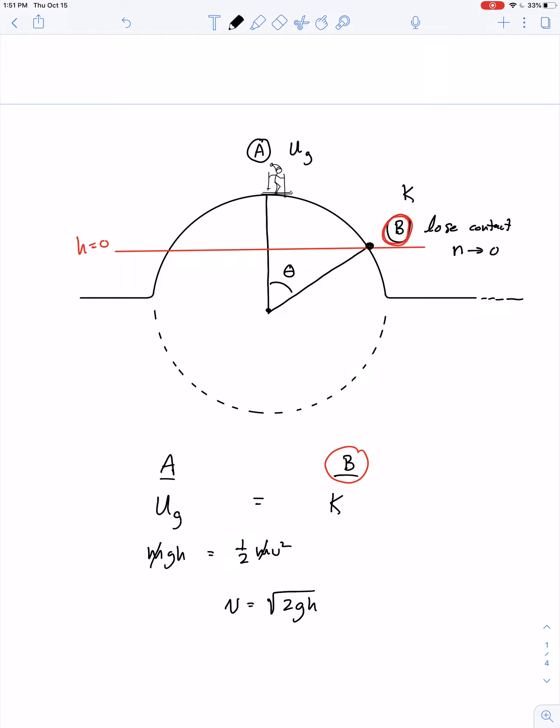Well, what would a free body diagram look like? Gravity pulls straight down. If there is any contact remaining, if we haven't totally lost contact yet, then there's normal force pointing this way. Are there any other forces? I believe that's it, right? We're assuming that the skis are very well waxed and the snow is wet, so we're going to ignore force of friction. There we have it.